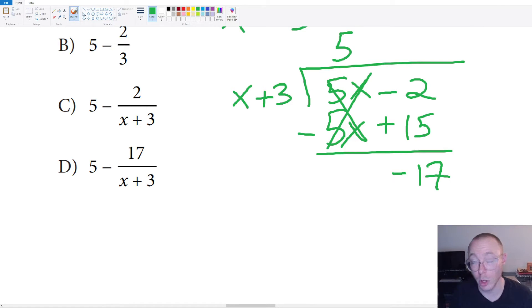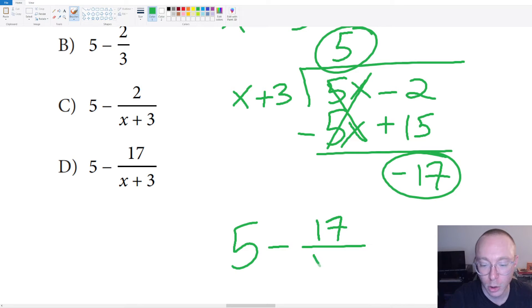Now, when we do long division, we take our remainder and we put it over what it was that we were dividing. So we end up getting an answer here. We end up getting that the five X minus two divided by X plus three is gonna equal five. But you're gonna have to add on this remainder and then that's gonna be negative. So it ends up being five minus 17 over X plus three.